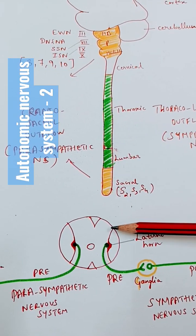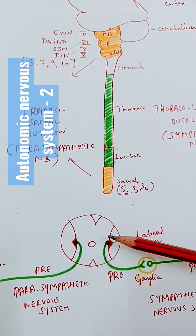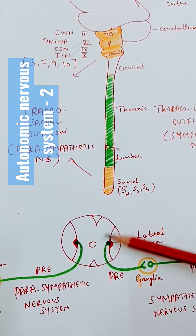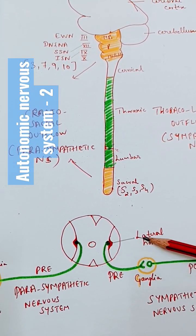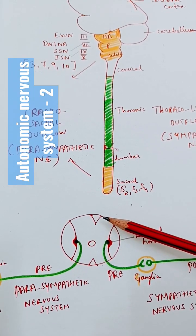So this is the cut segment of the spinal cord. If you can see here, this is the dorsal horn, this is the ventral horn, and this is the lateral horn, otherwise called the intermediate horn. This is the posterior aspect and anterior aspect.